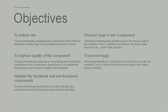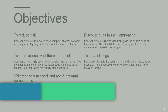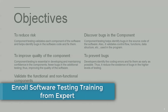The second objective is to improve quality of the components. Component testing is essential for developing and maintaining confidence in the components. It enables further testing, thus improving the quality of the software. Only if the first component is of good quality and the code is good will they integrate it with the second component.